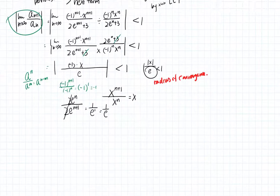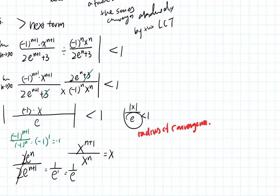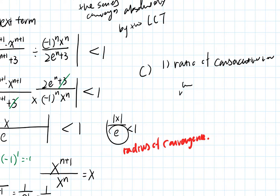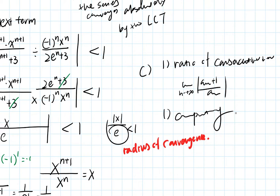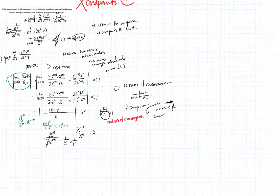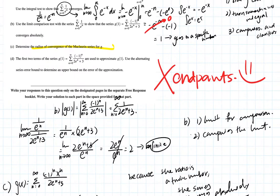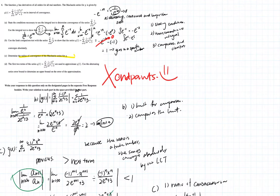My guess for College Board scoring on part C: one point for finding the ratio of consecutive terms as the limit as n approaches infinity of |a_{n+1} / a_n|, and one point for computing the radius of convergence as e.